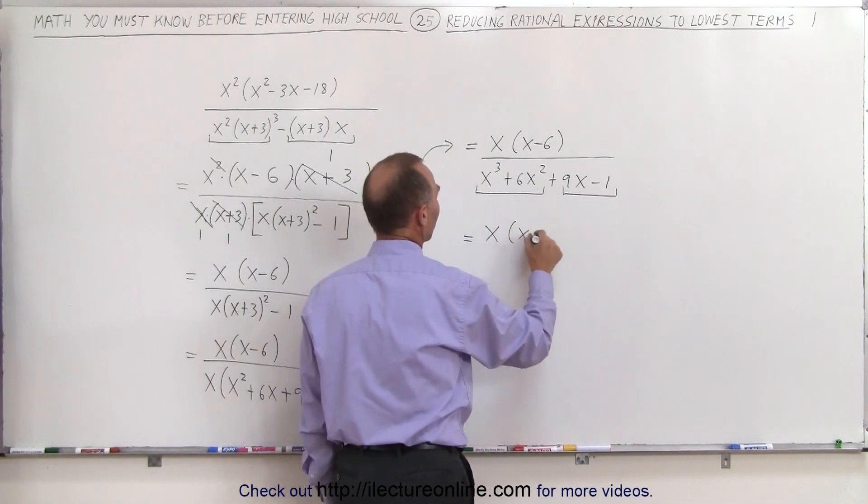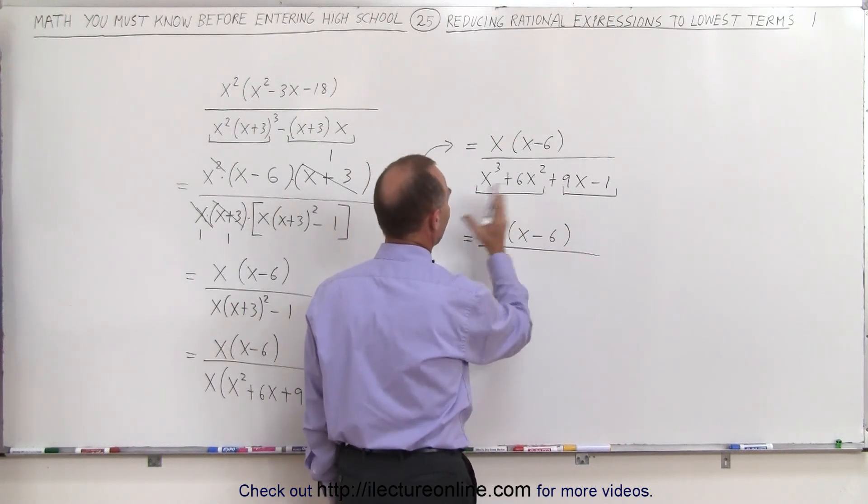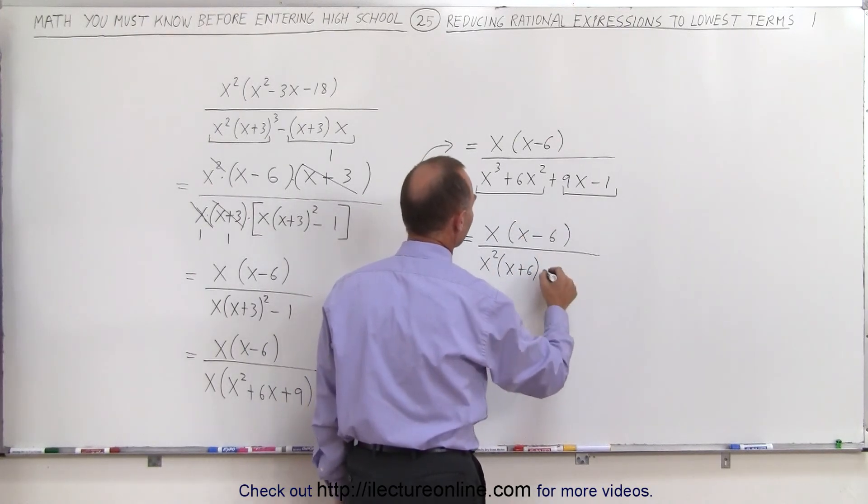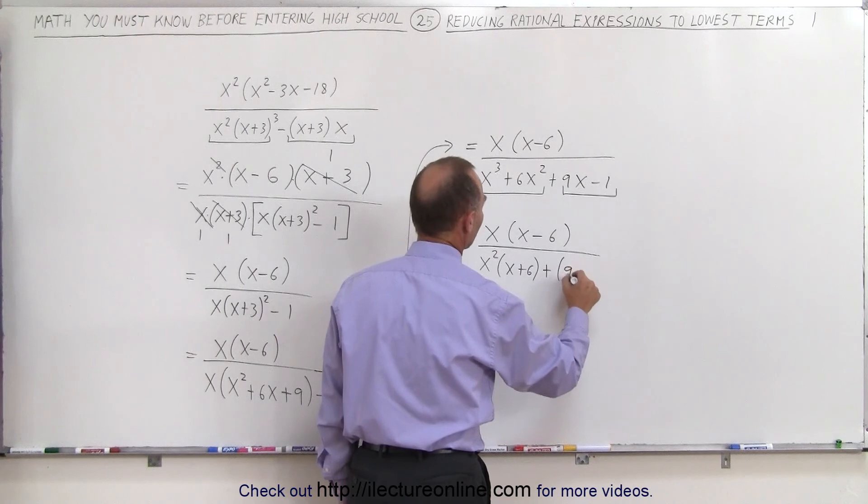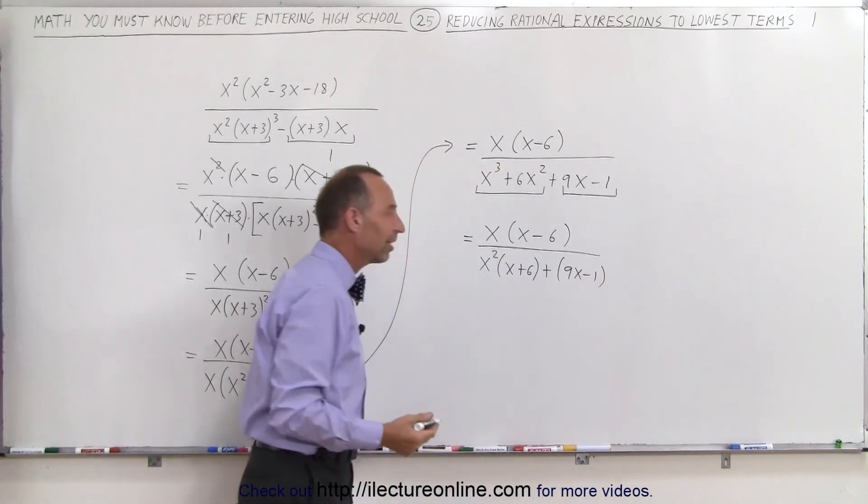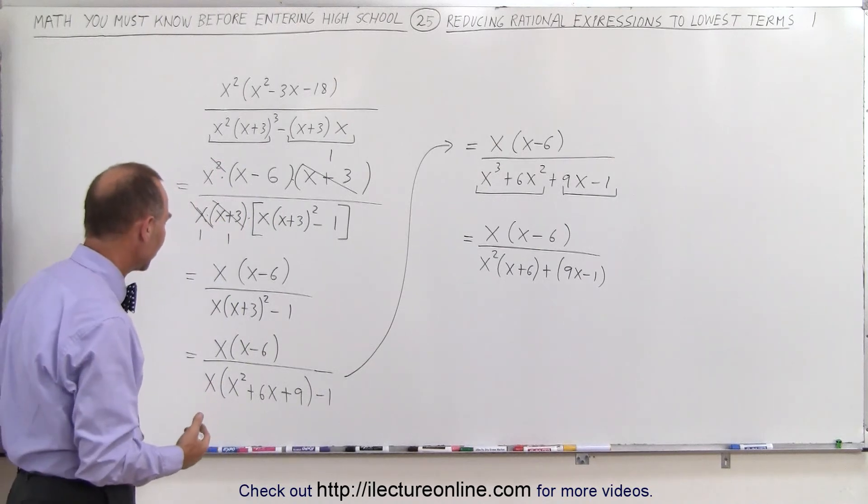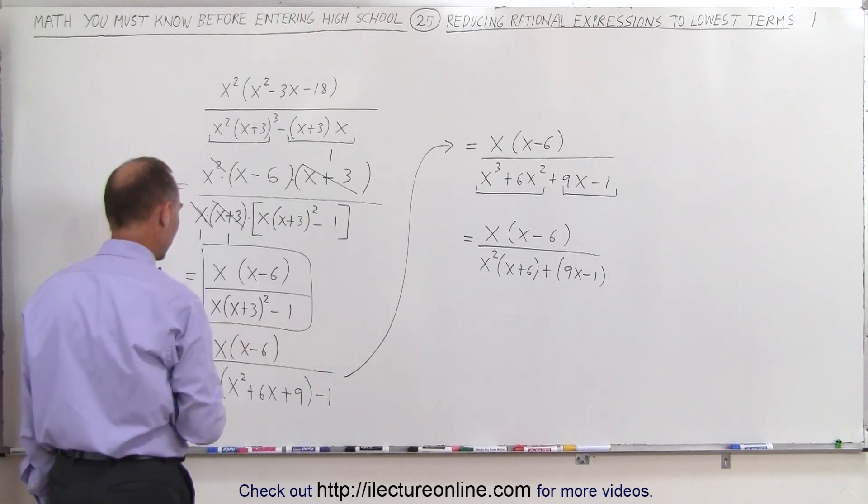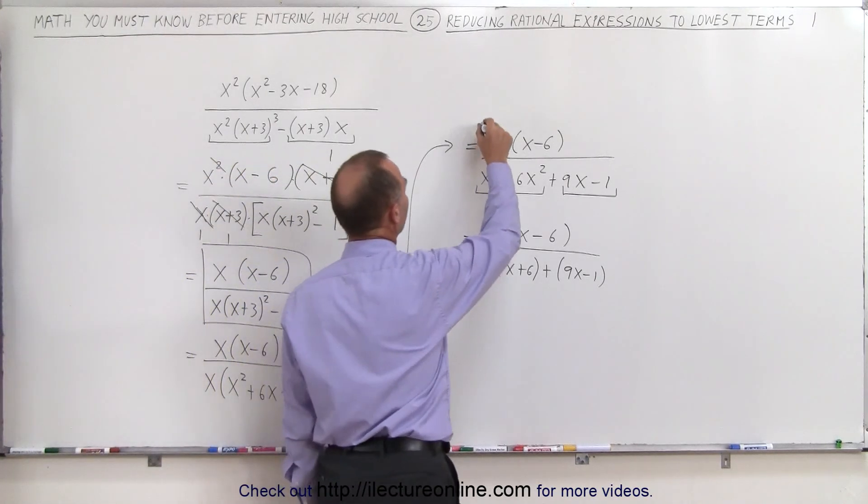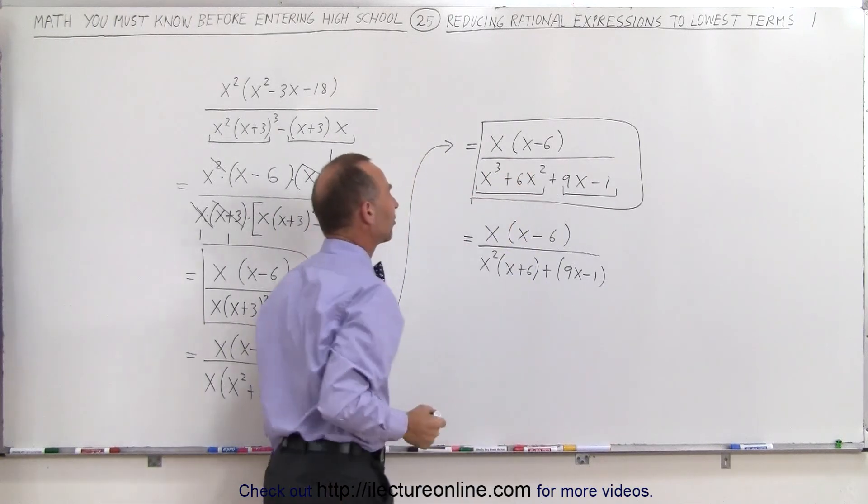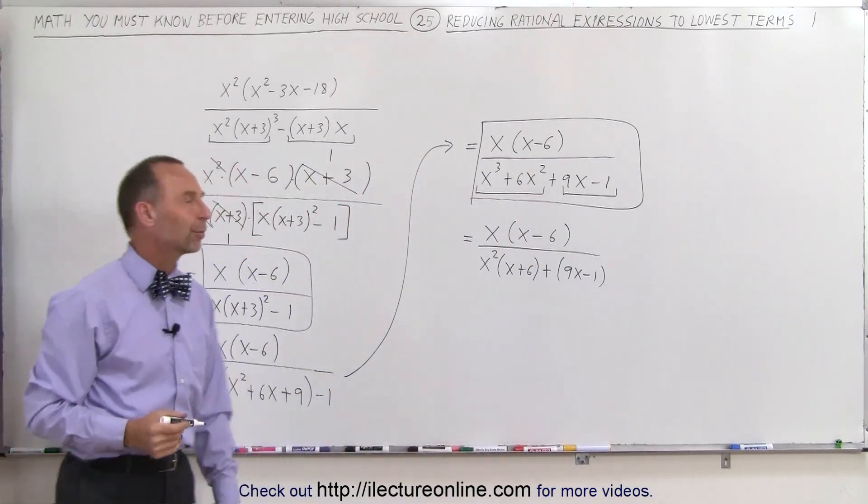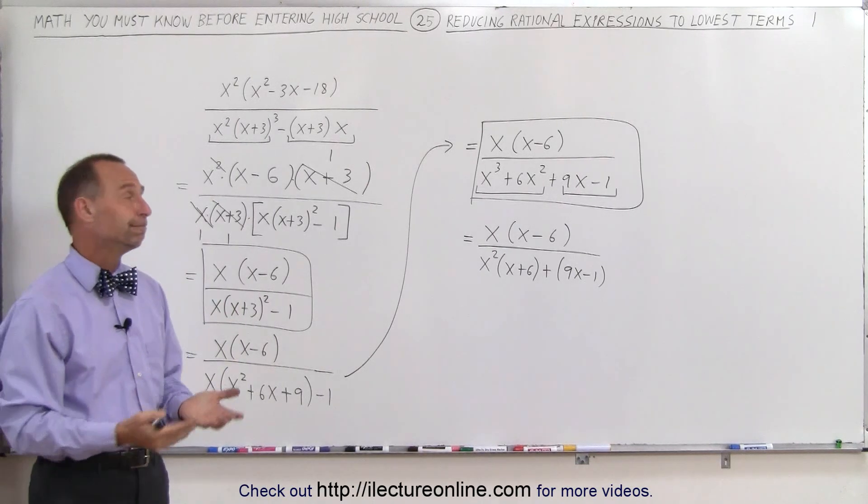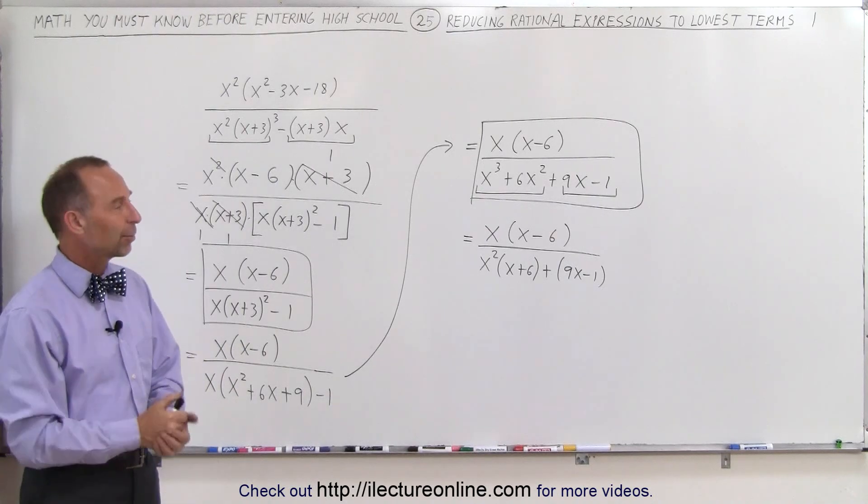x times x minus 6 in the numerator, that doesn't change, and here I can factor out an x squared, and I'm left with an x plus 6, and here, there's nothing I can factor out, so this becomes a 9x minus 1, and again, it looks like the denominator cannot be factored any further than what I already had. So, I can say, I can stop at this point, so that's as far as I want to go, or I can say, well, I like this format better, and I can stop at this point and say, that's the simplest form I can have with this particular problem. So, I'll just leave it like that and say, it doesn't look like in fact you're the non-nair anymore, and that's as far as I can go with the problem, and that's how we do that.